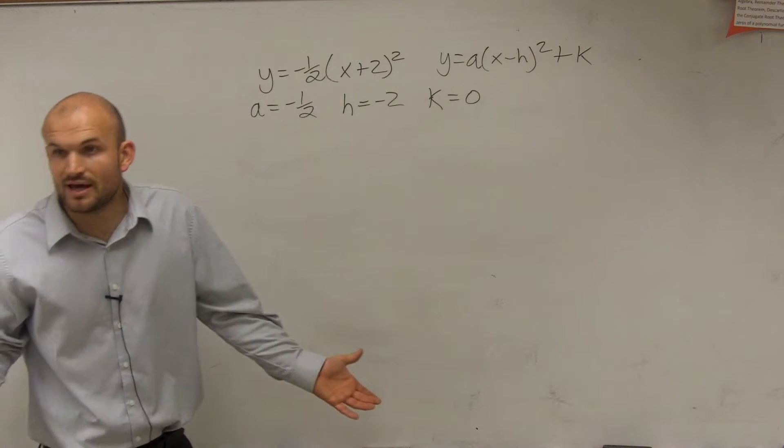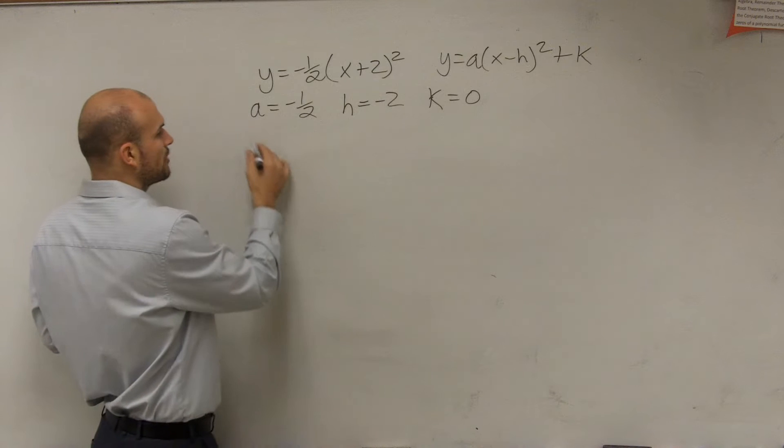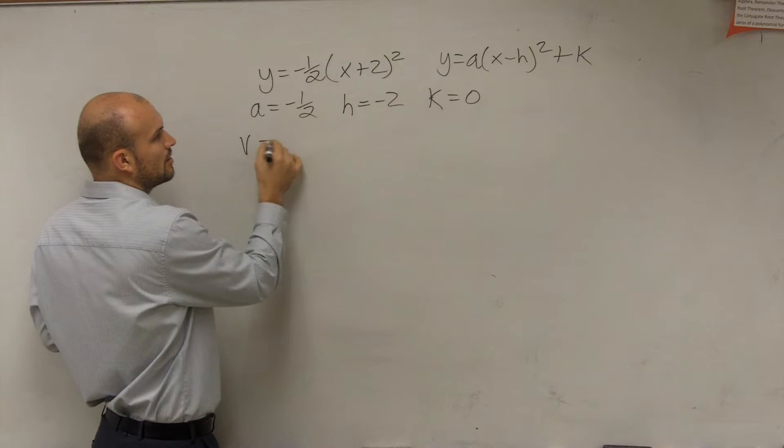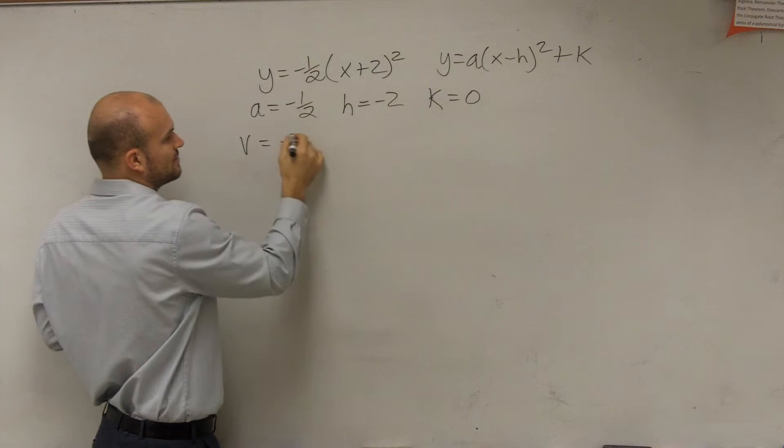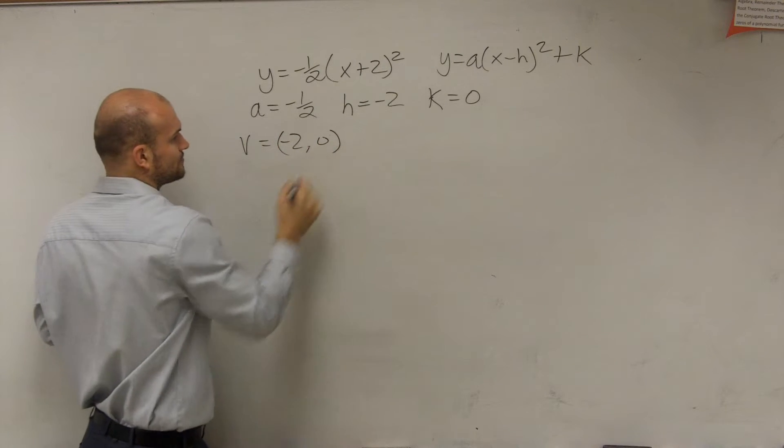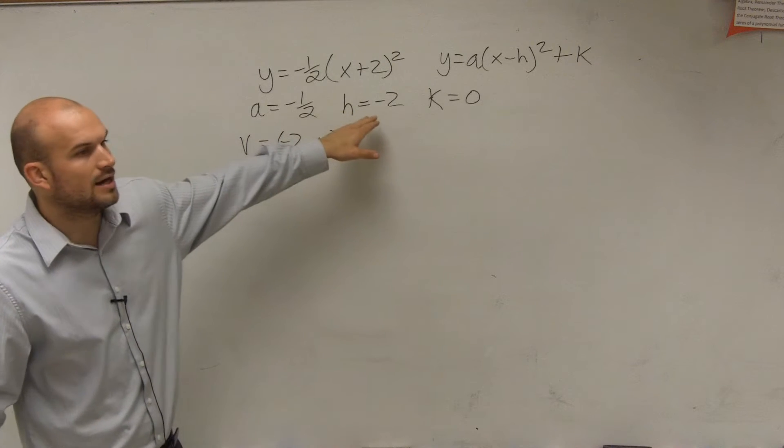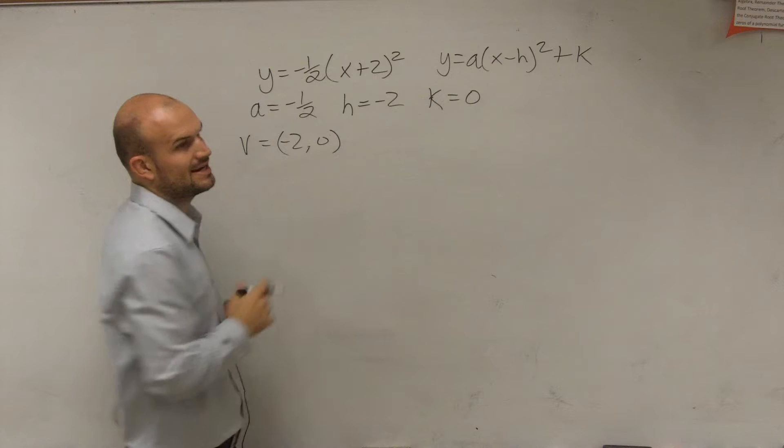So now I know all these three values, so therefore I can figure out the important information, like my vertex, which is going to be h comma k, so negative 2 comma 0. My axis of symmetry, which is going to be at negative 2.